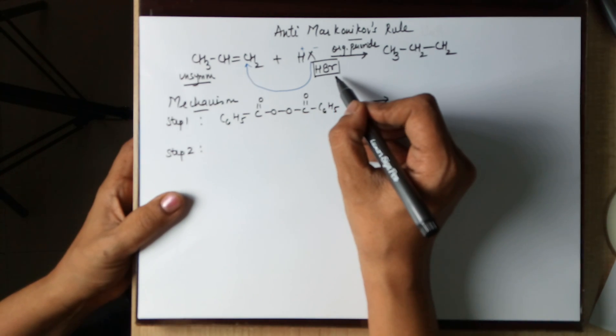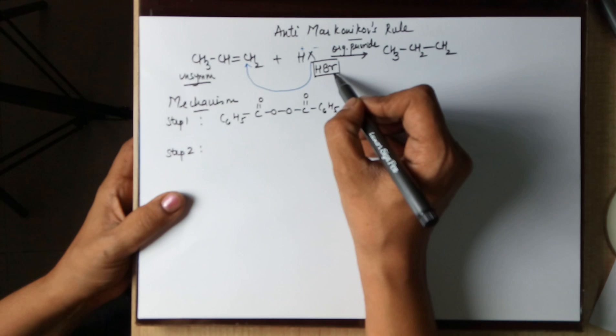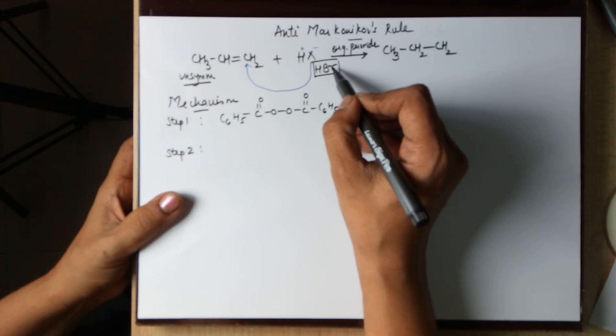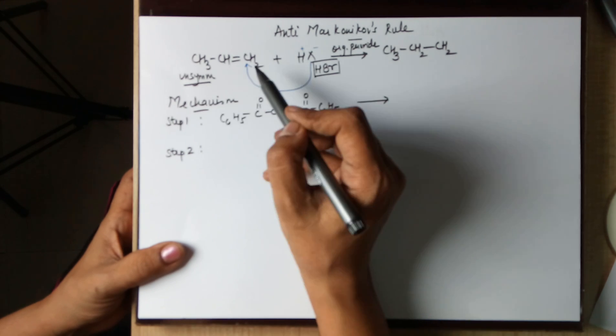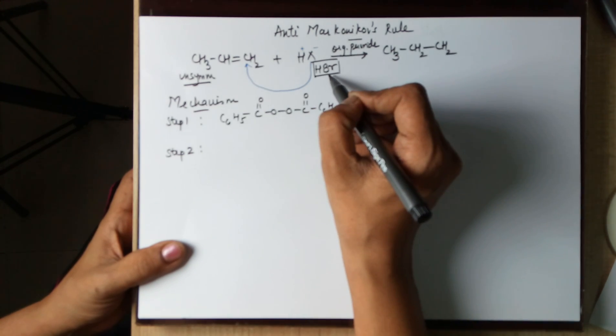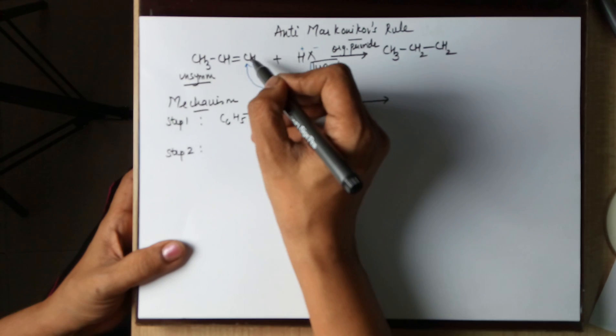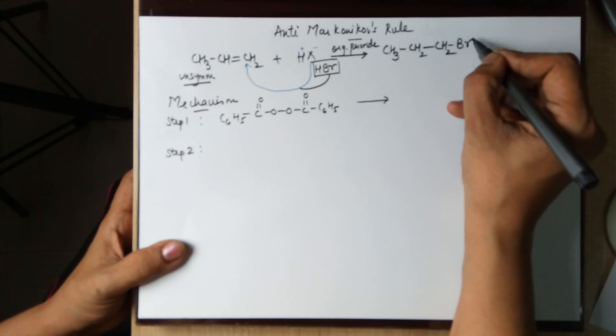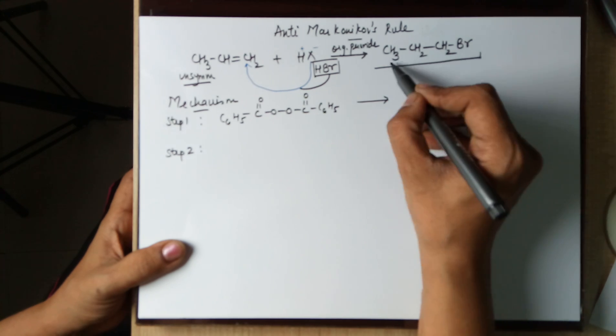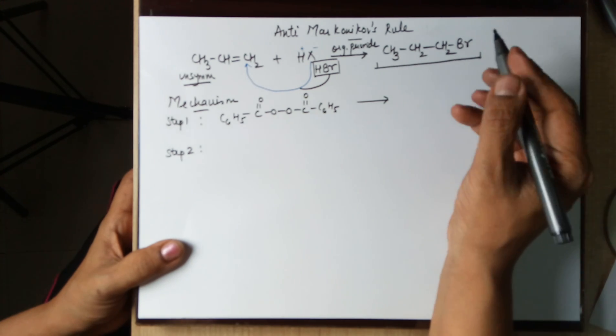It is only applicable to HBr mind you. The negative identity therefore becomes a Br. The negative identity this time would go to double bonded carbon having more number of hydrogens. Hence your Br will have to move to the terminal CH2. Hence you have a Br here. This is your final product when you talk about an anti-Markovnikov's rule.